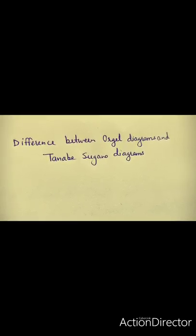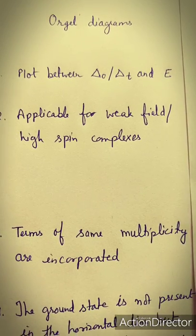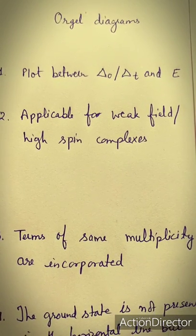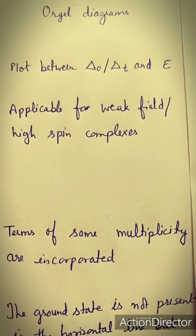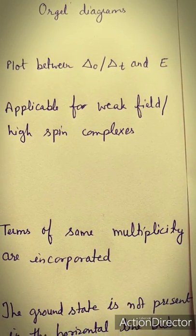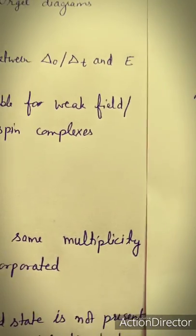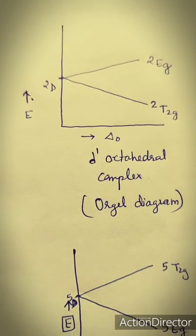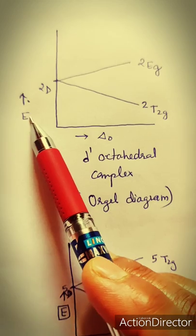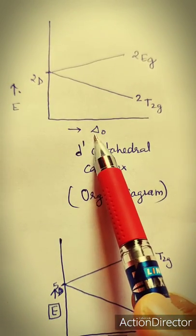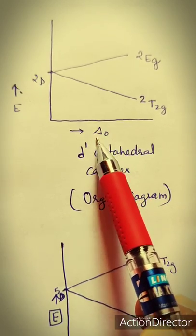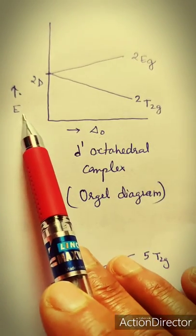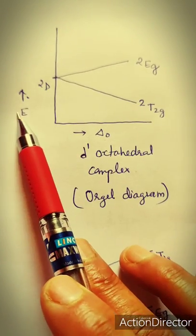What are Orgel diagrams? Orgel diagrams are plots between δO or δT and E. Here, E is the energy and δO is the crystal field splitting energy for an octahedral complex. The plot between δO and E is known as an Orgel diagram.